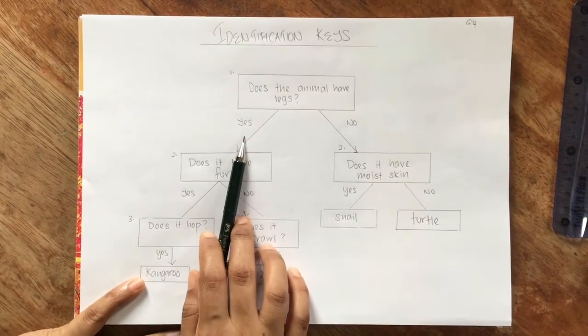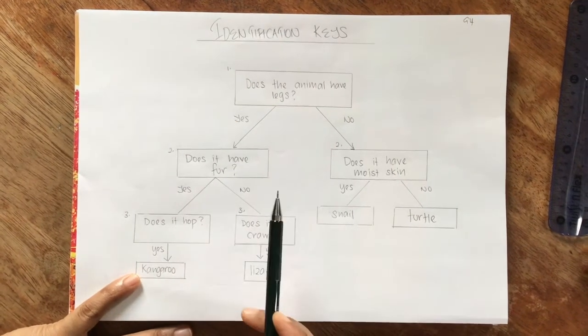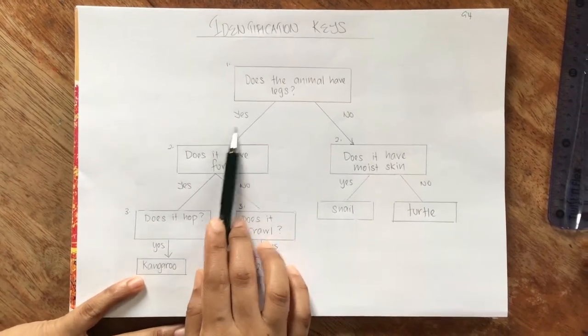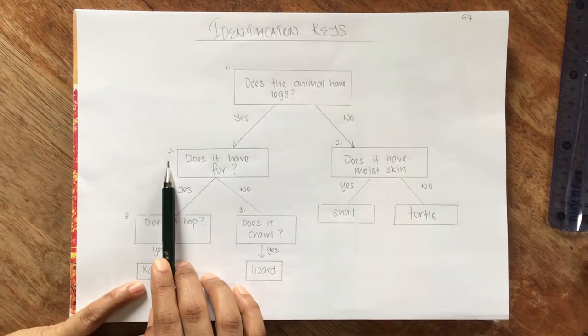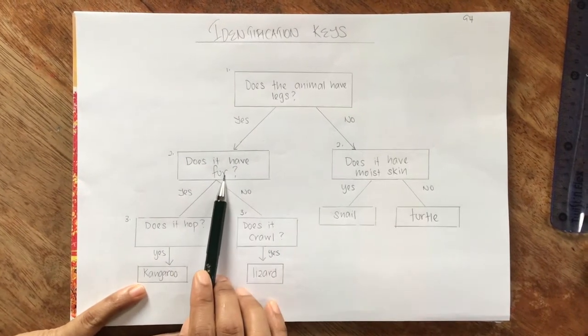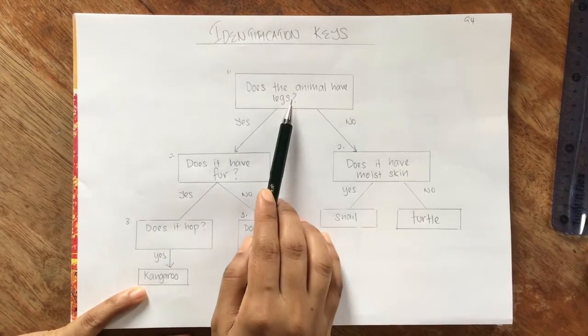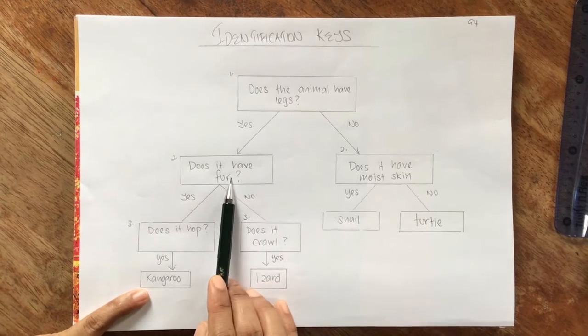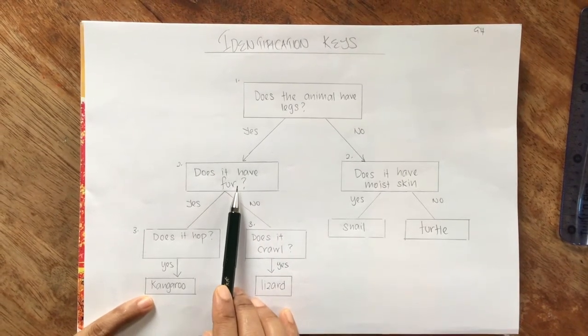Now if I said yes, let's finish the yes first, right? So if teacher said yes, that leads me to my second question. Does it have fur? Some animals with legs will have fur, some will not have fur, am I right?